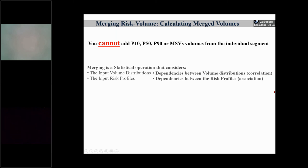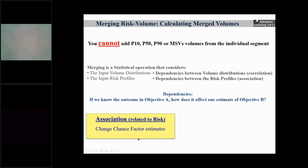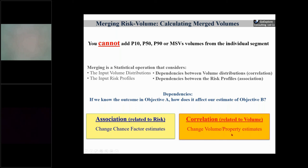So what are dependencies? Dependency means: if you know the outcome of objective A, how does it affect the estimate for objective B? If it affects the risk, it's called association — meaning the chance factor estimates of objective B change based on the outcome of A. If it changes the volume estimate of the next objective, that's correlation. Association is the most important one when you risk-merge volume objectives.